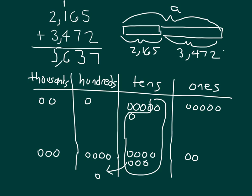Remember to place our comma, and let's read the whole problem together. 2,165 plus 3,472 equals 5,637.